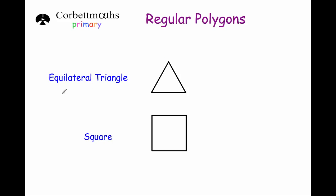A regular triangle is called an equilateral triangle, because all angles are the same and all sides are the same length. To find the size of each angle, we take what the angles add up to in a triangle — which is 180 — and divide it by three. 180 divided by three gives us 60 degrees, so in an equilateral triangle all three angles are 60 degrees.